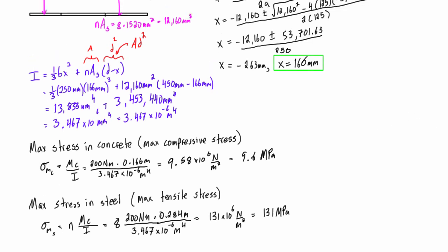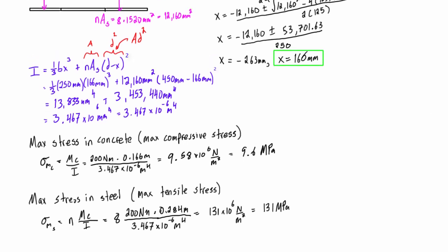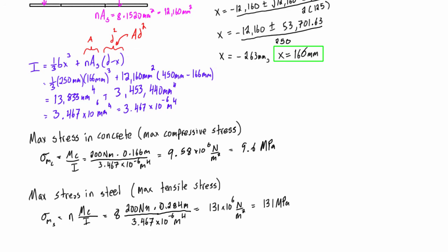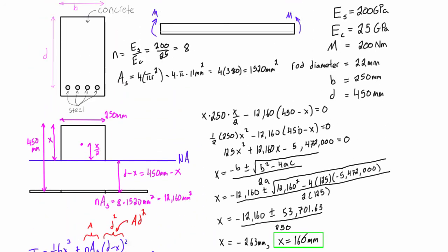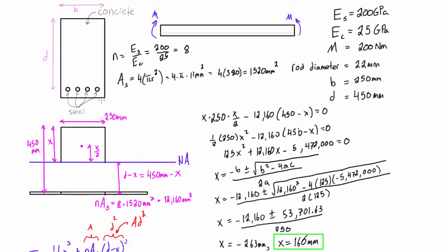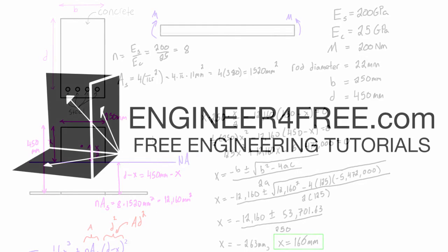We found the max compressive stress in the member, which is the max stress in the concrete, and the max tensile stress in the member, which is the max stress in the steel. We did that by following the method outlined in a previous video on how to solve problems for pure bending of reinforced concrete.